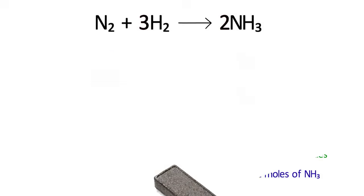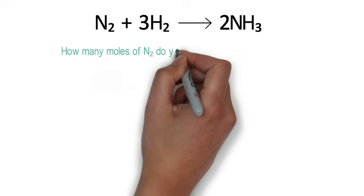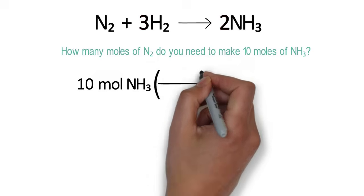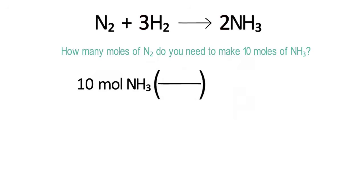Let's try a sample problem. How many moles of nitrogen do you need to make 10 moles of ammonia? First, write down the quantity that you know. 10 moles of ammonia. Next, multiply that by the ratio of nitrogen to ammonia in the balanced reaction. Since we are starting the problem with ammonia, we put the